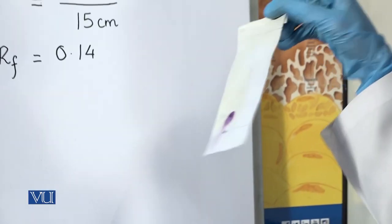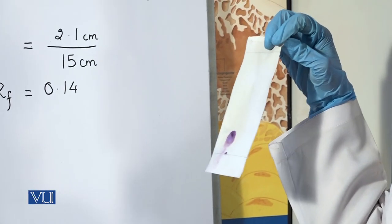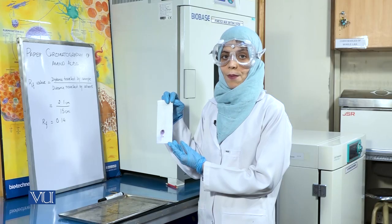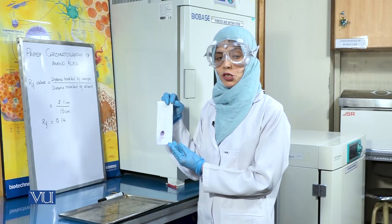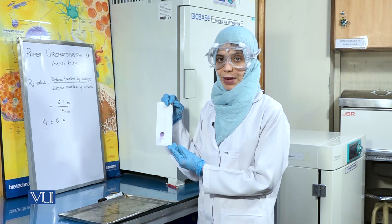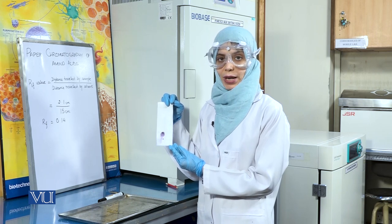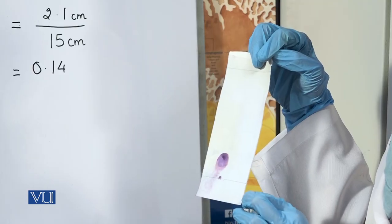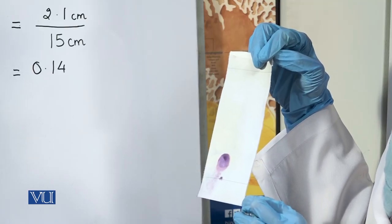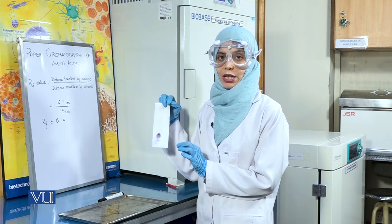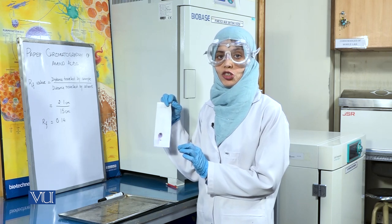This indicates that our sample contains the amino acid lysine. Paper chromatography is a valuable tool for the identification of amino acids. Each amino acid has a different RF value based upon the presence of the type of R group in that amino acid. Therefore, using RF values, we can identify which amino acids are present in our sample.